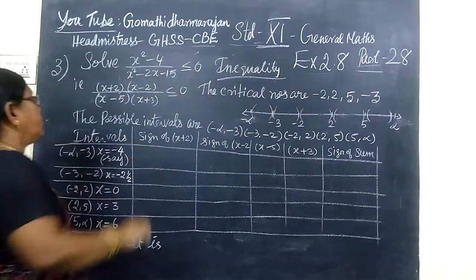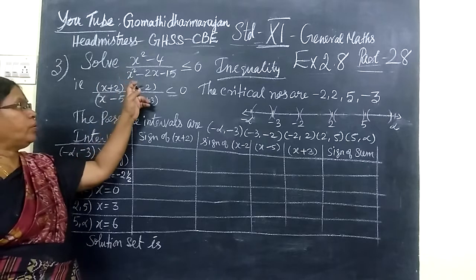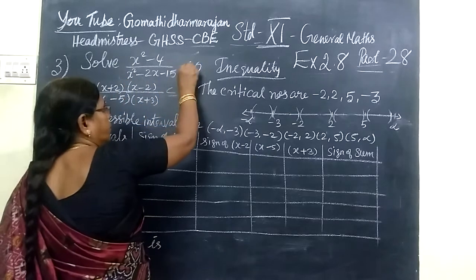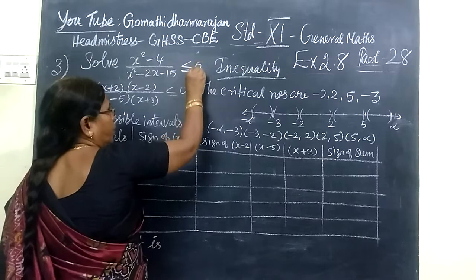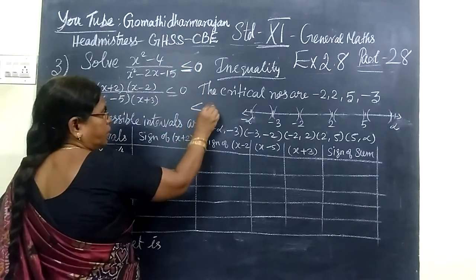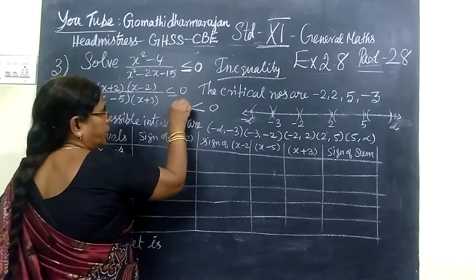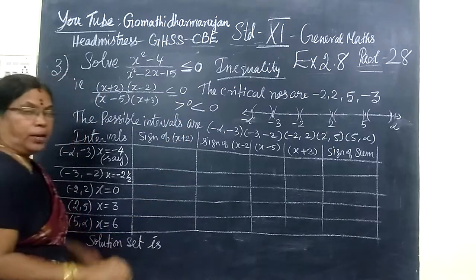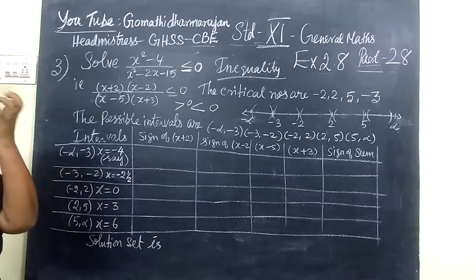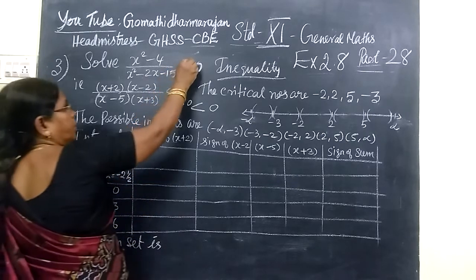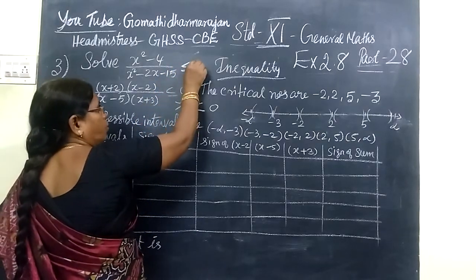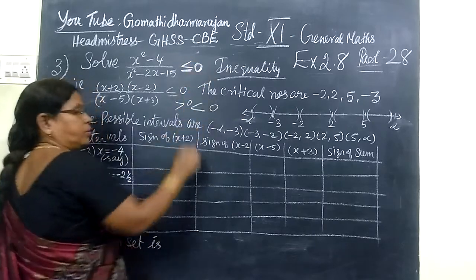In this third sum, it is given: inequality less than or equal to 0. When the resulting part is less than 0 or greater than 0, we are considering open intervals only. For inequality less than or equal to 0, we are considering closed intervals in the solution set.